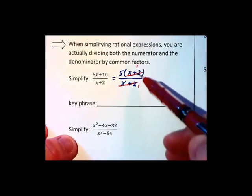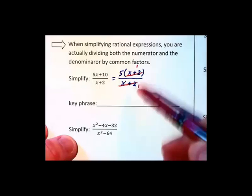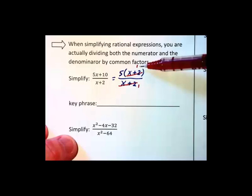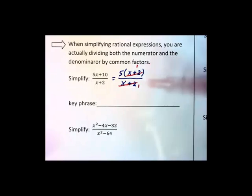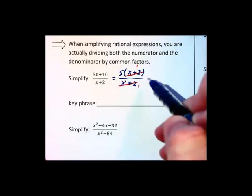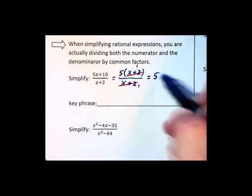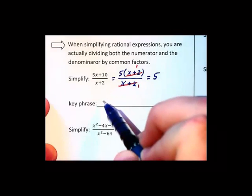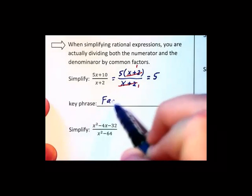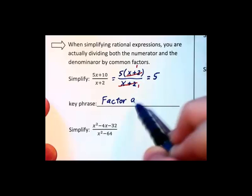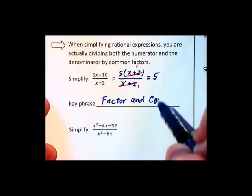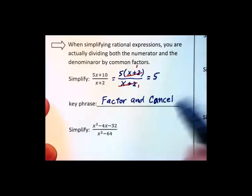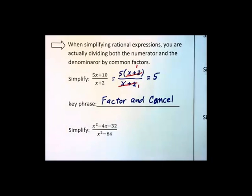Technically, what we're doing is we're dividing both the numerator and the denominator by x+2. When you divide something by itself, you get a 1, and that's why we have that 1 up there in the numerator. Now all we have left is 5. So a key phrase throughout this coming chapter is that of factor and cancel. You can only cancel factors, expressions that are in a multiplication problem.